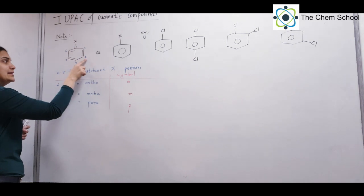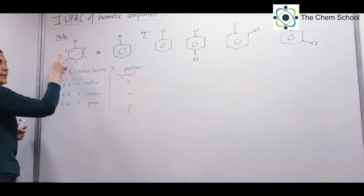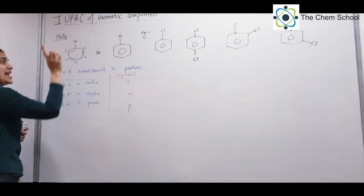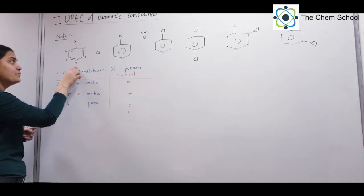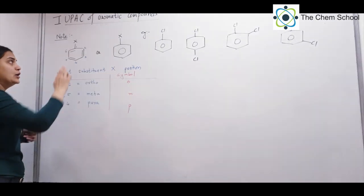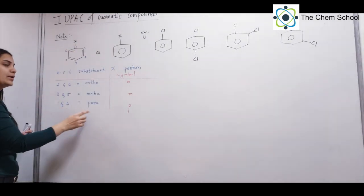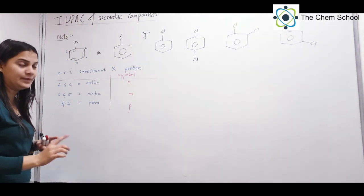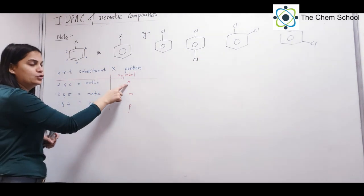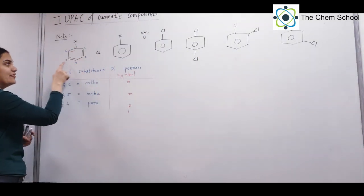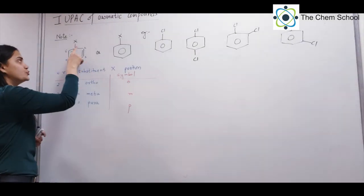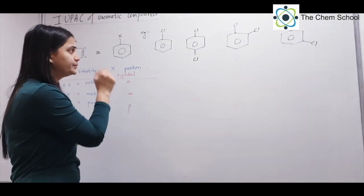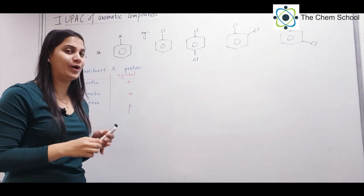Similarly, with respect to 1, positions 3 and 5 — the ones next to ortho — are your meta positions. And 1's exact opposite, that is position 4 in benzene, is the para position. So 1 and 4 are para to each other. To summarize: with respect to 1, positions 2 and 6 are ortho (symbol: o), positions 3 and 5 are meta (symbol: m), and position 4 is para (symbol: p).